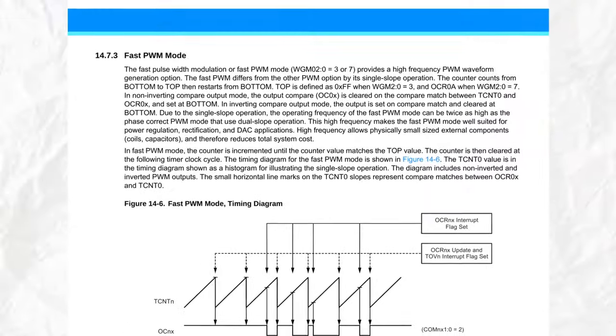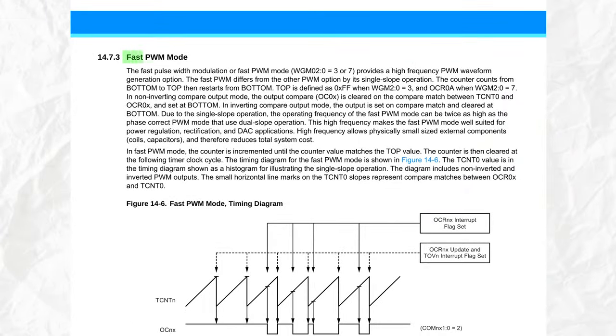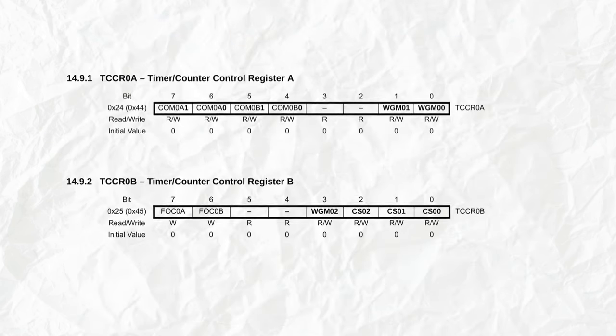The first thing we want to do is set the mode of operation. I'm going to use the fast PWM mode. To set this we need to use the timer counter control registers A and B. And there's three specific bits to do this, which are the WGM zero bits.